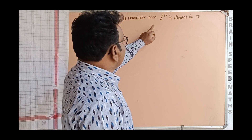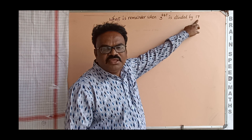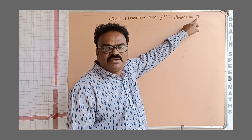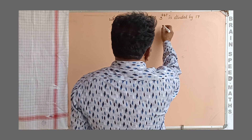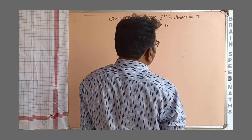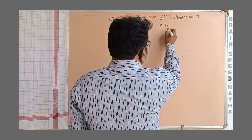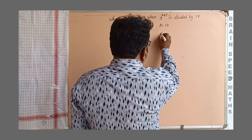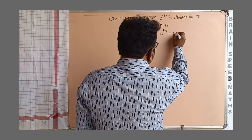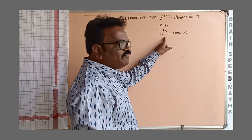3 to the power of 247 is divided by 17. Here 17 is a prime number. If it is a prime number, we apply Fermat's theorem. The prime number p is equal to 17. Fermat's theorem states that if p is a prime number, then a to the power of p minus 1 is congruent to 1 modulo p. This is Fermat's theorem.